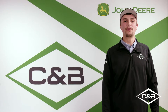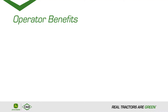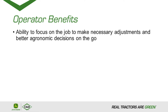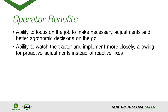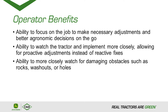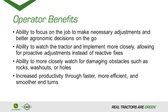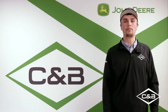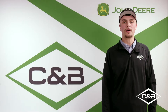So what benefits does Auto-Track Turn Automation provide for an operation? It gives the operator the ability to focus on the job, make necessary adjustments, and better economic decisions on the go. It also gives them the ability to watch what's happening with their tractor and implement, to be more proactive rather than reactive, and to be more efficient and provide more repeatable end-of-pass turns.